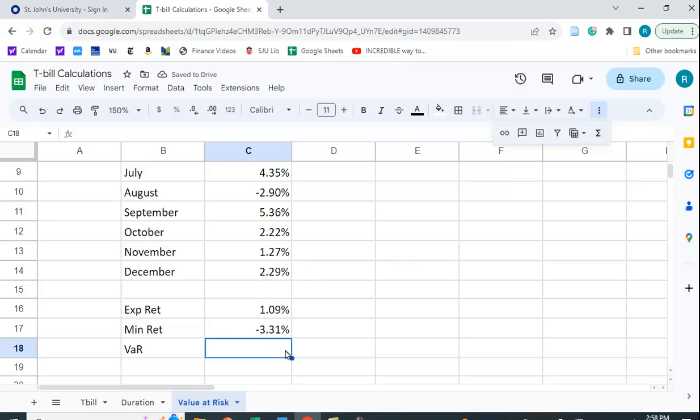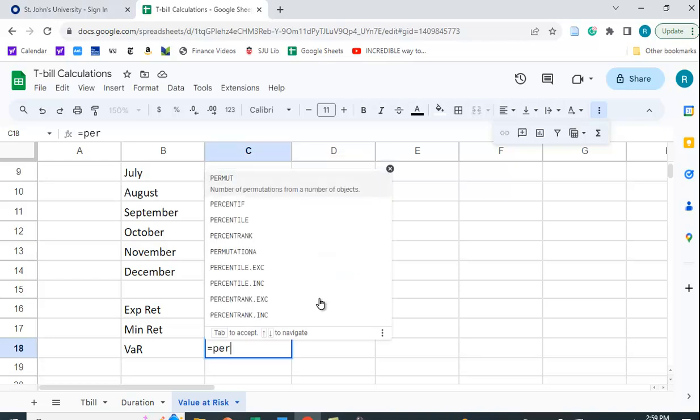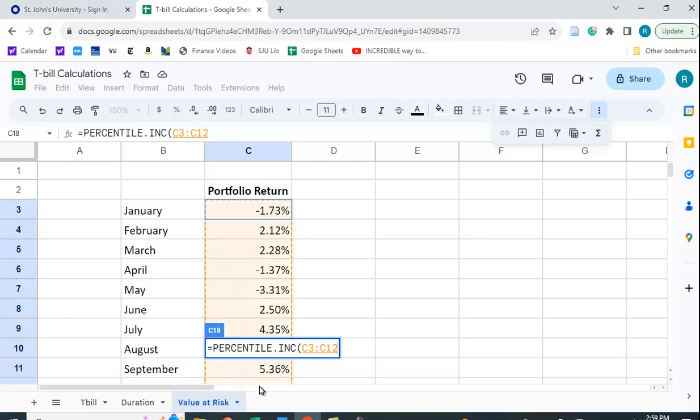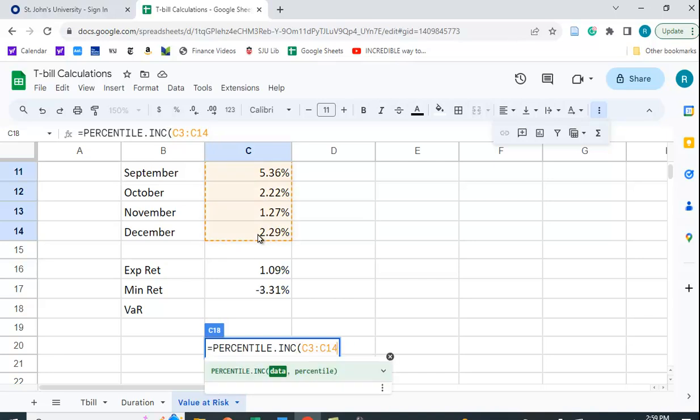We get minus 3.31%. So the value at risk is we care about what's the probability of being below a certain amount. What's the 95% confidence we feel we're not going to lose more than this amount? In this case, we can use something called percentile.inc. It's the value at a given percentile of a data set, inclusive of all the numbers. We're going to highlight these. Wait, we have to put in a percentile. Let's put in 0.05, so we're talking 5% confidence. What do we get? We get minus 3.85.